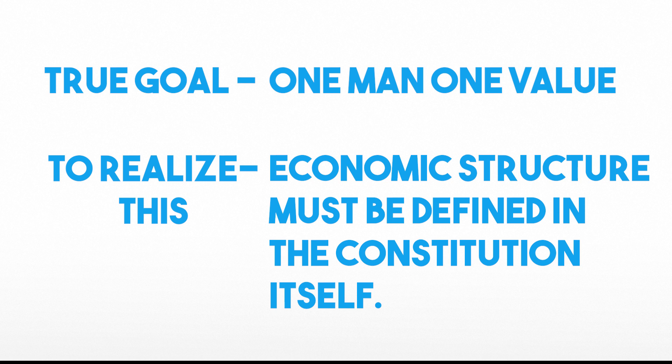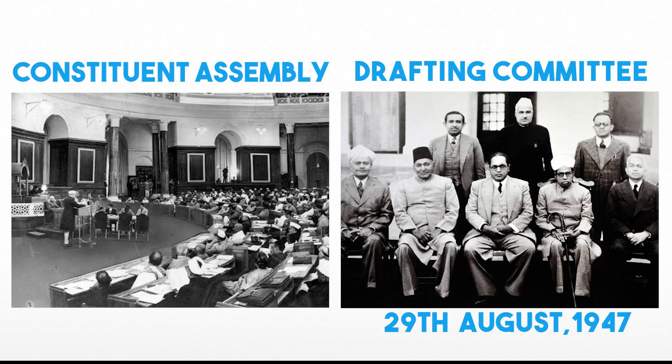Eminent members like K.M. Munshi, K.T. Shaha, Harnam Singh and others also submitted a memorandum to the Committee of Fundamental Rights. On 15th August, India became independent. Dr. Ambedkar became the first law minister of independent India. On 29 August 1947, the Constituent Assembly set up a drafting committee under the chairmanship of Dr. Ambedkar to prepare the draft constitution.